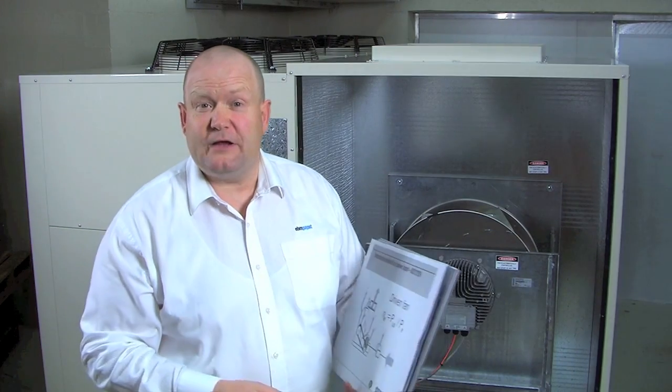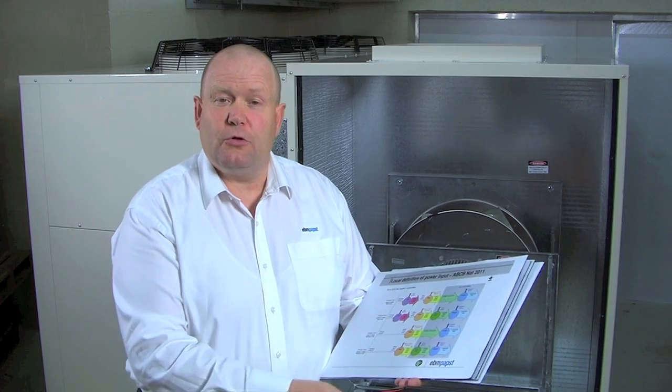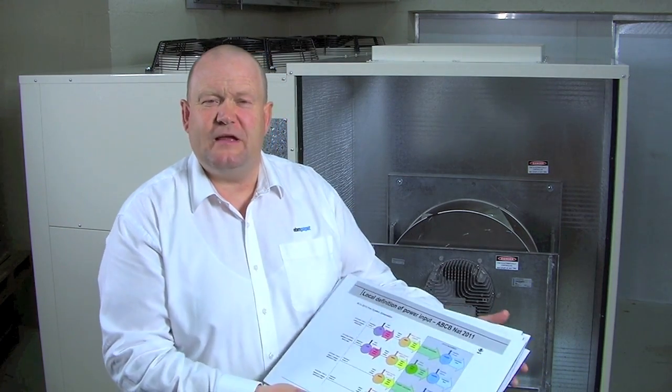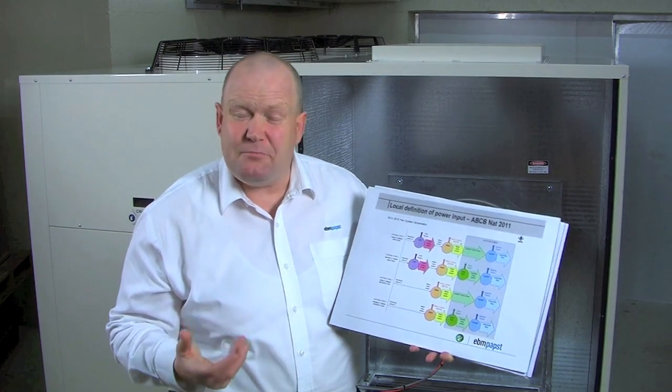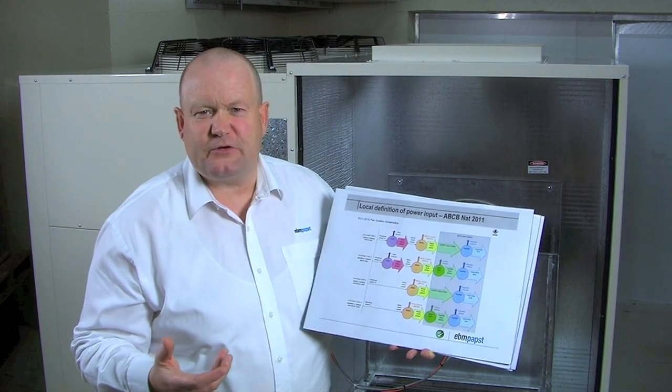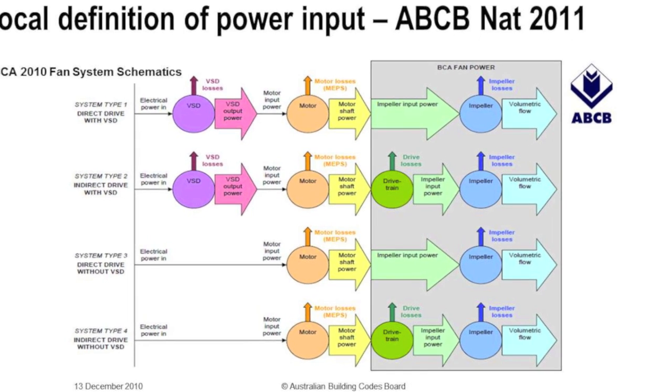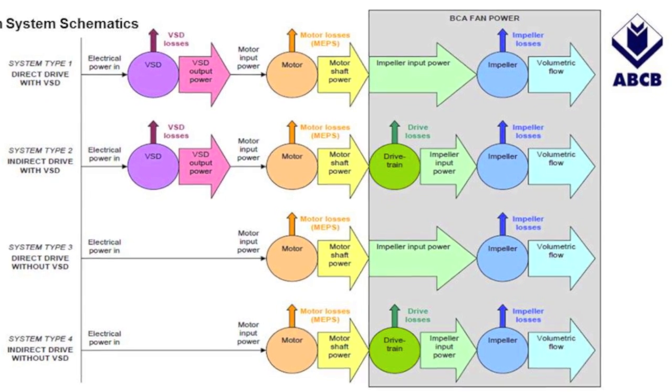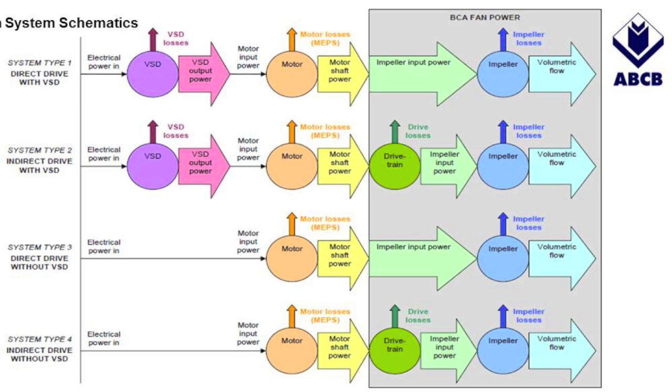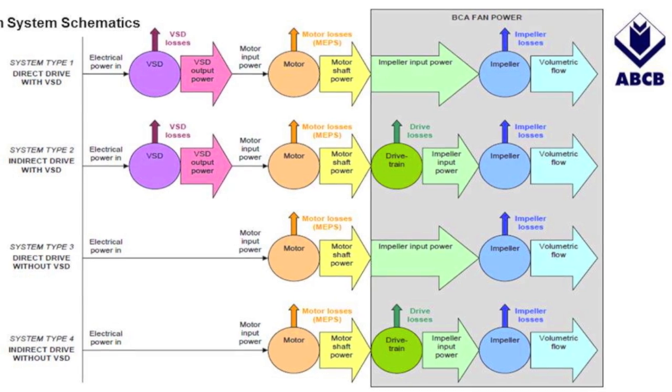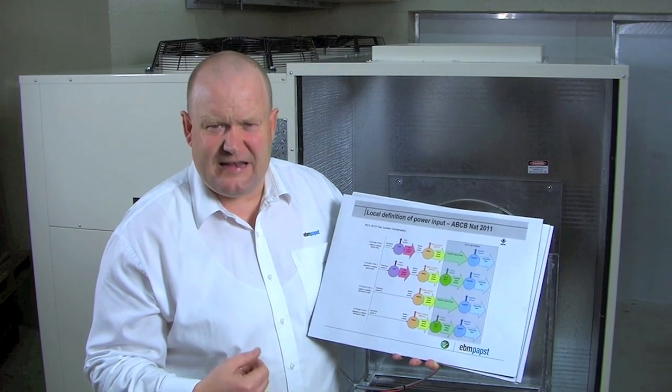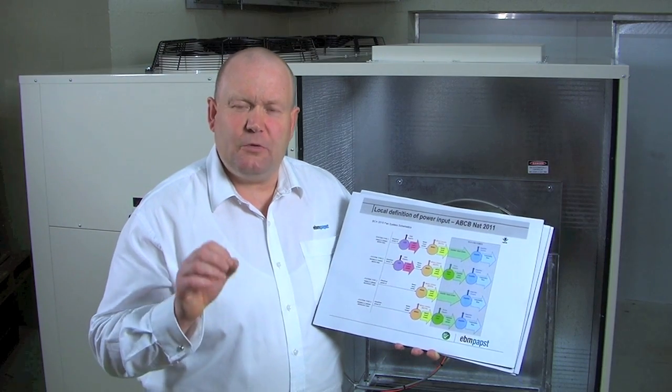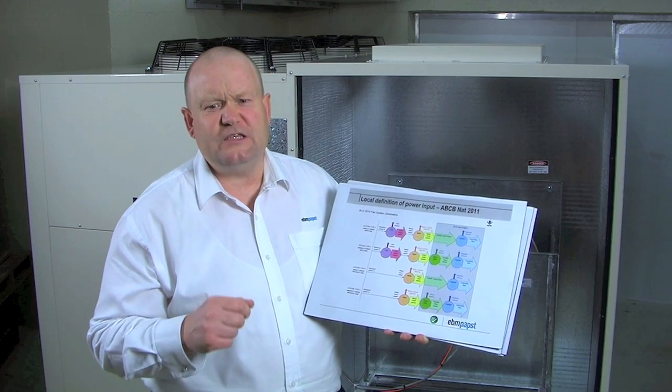Now, locally what's happening in Australia? In Australia, the local authority affecting fan minimum efficiency is the building codes of Australia, and here I have a graph which defines the fan input power inside the building codes of Australia. On the right hand side, the grey out area is the area which the building codes define as fan input power, and you can see that's the shaft power. You can see on the left hand side the consideration is taken towards the whole fan system, but only the right hand side, the fan input power at the shaft, is defined as fan input power. Now, this is in complete difference to the international standards and we need to be aware of that.